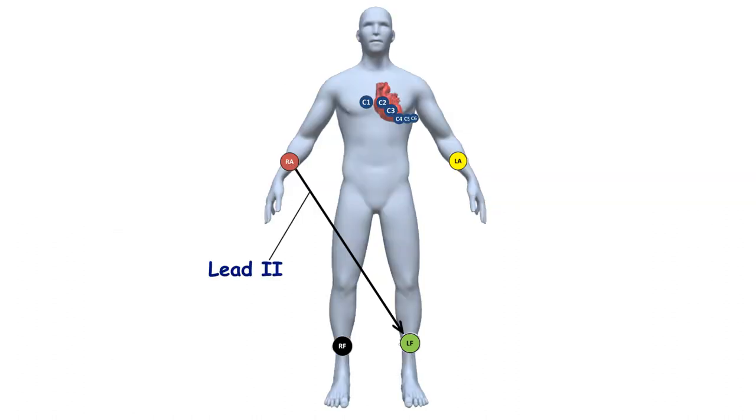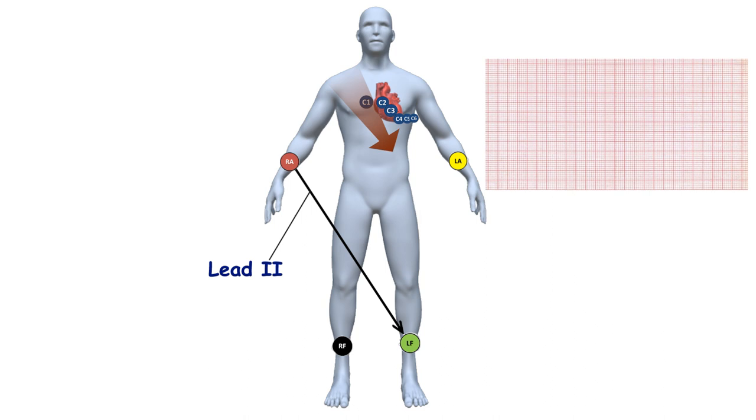For example, the electrical potential difference between the right arm and the left leg where electrodes are placed is recorded as lead 2. When depolarization or repolarization wave is directed towards the left leg electrode, a positive deflection of line is recorded on ECG.